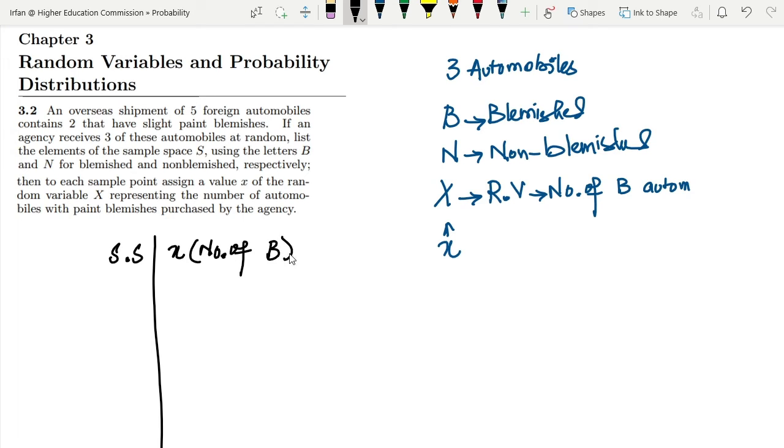Now the first element here would be NNN - we can have three automobiles which are non-blemished, so here the value of X would be zero because no B is available here.